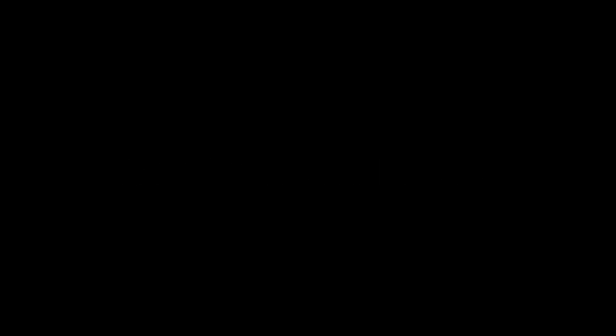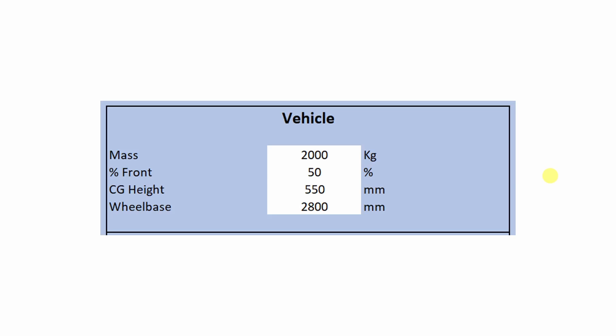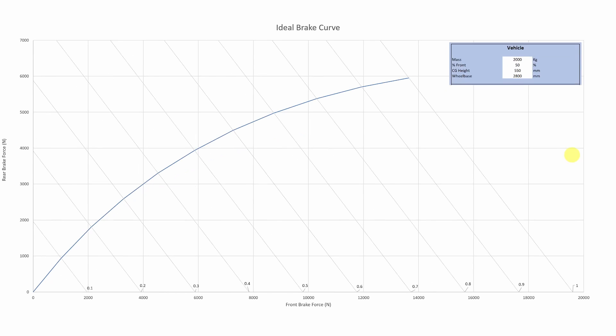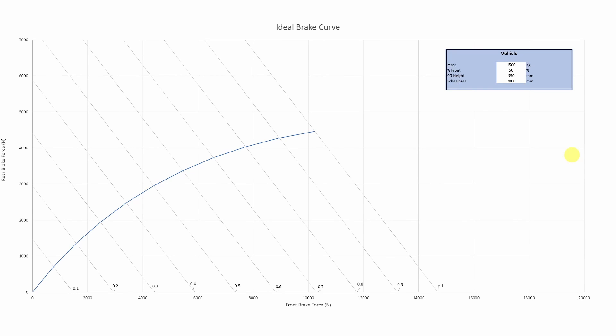Let's look at what happens to the curve when we start playing with these numbers. Here we see the four parameters that we need to know in order to generate the ideal brake curve. Let's change the weight of the car from 2,000 kg to 1,500 kg. You can see the basic shape of the curve is the same — it just takes less force to stop the lighter car, which makes perfect sense. You see how the brake force has been reduced based on the weight of the car.